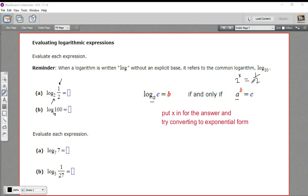Well, 1 half is 1 over 2. So this is going to be negative 1. 2 to the negative 1 power is 1 half, right? You have that negative exponent means you take the reciprocal. So this is negative 1.